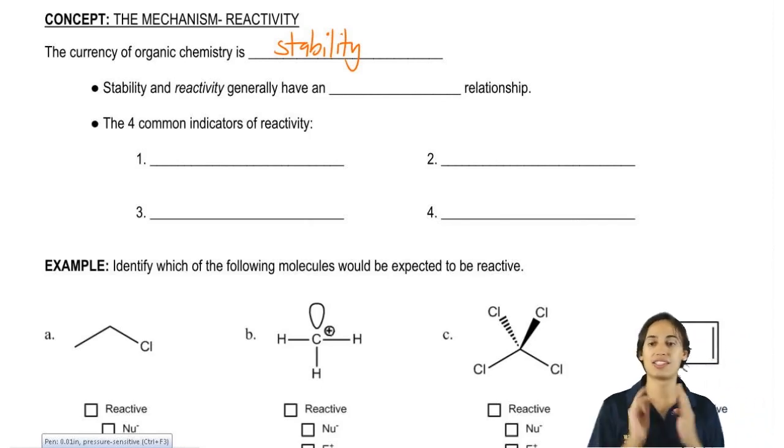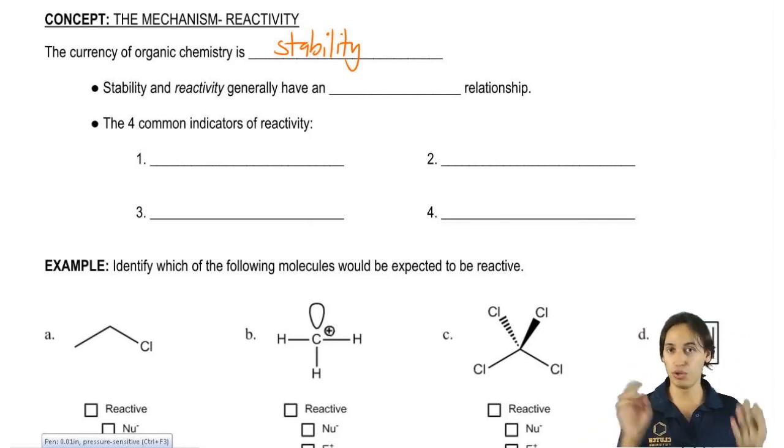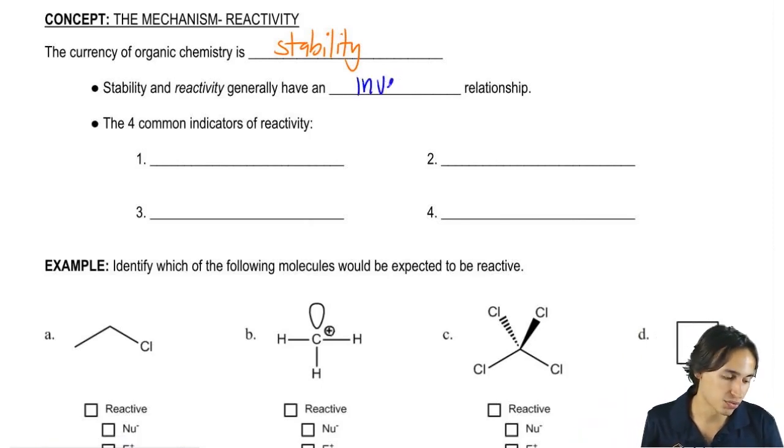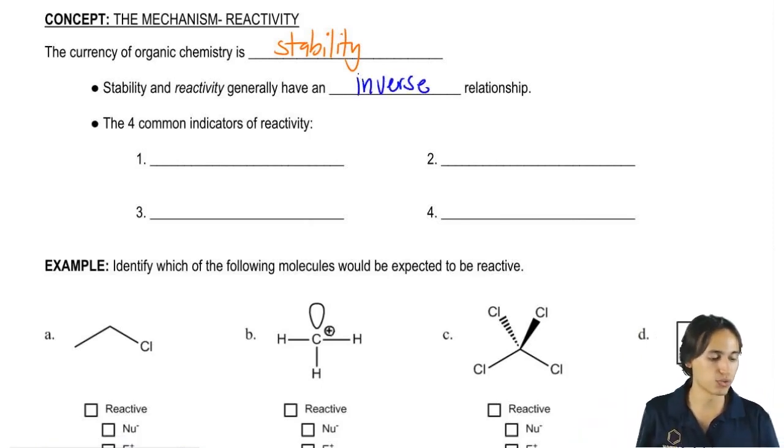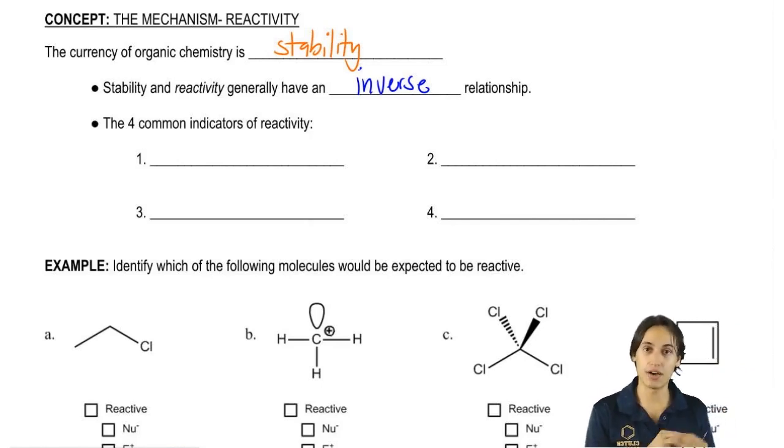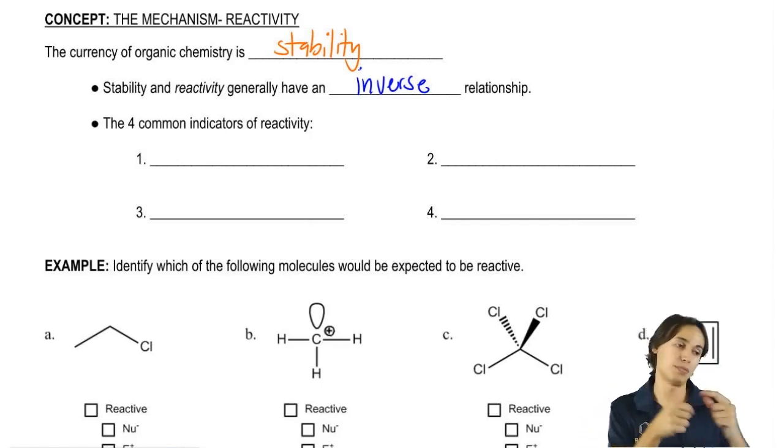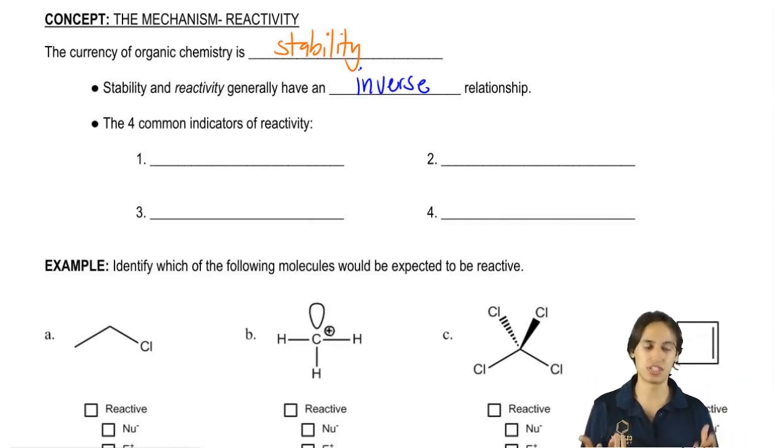And it turns out that stability and reactivity – you hear these words all the time – actually have an inverse relationship. Inverse, what I mean by that is opposite. That means if stability goes up, reactivity is generally going to go down. If reactivity is up, that means stability goes down. They're opposites of each other.